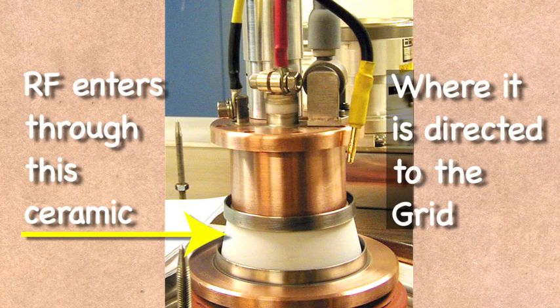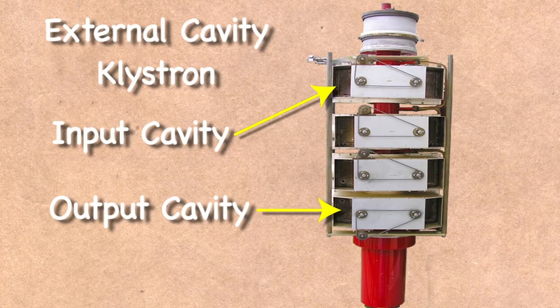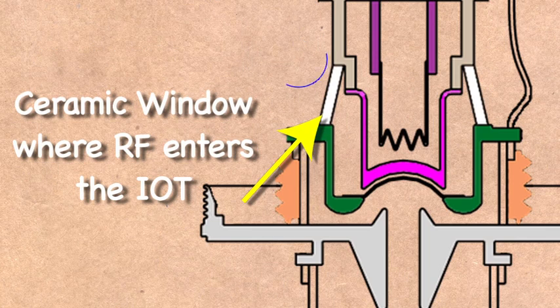Now, the input is where the IoT differs from the klystron tube, which was widely used for UHF broadcasting up until the arrival of the IoT and digital broadcasting. The IoT's input cavity is positioned to direct the input RF directly to the space between the cathode and the grid.